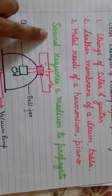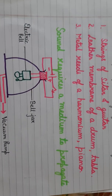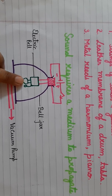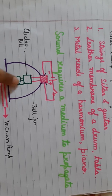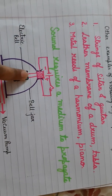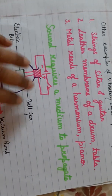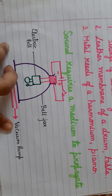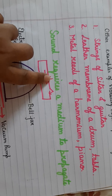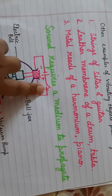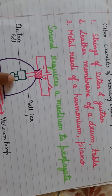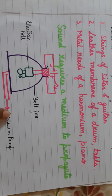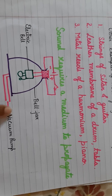Now look at the next topic: sound requires a medium to propagate. I have drawn a small activity for you. I have taken an electric bell connected to a cell, and it is covered with a glass bell jar. To the lower end of the bell jar, I have attached a vacuum pump. Initially, when the switch is on, the current flows through the bell and the bell starts ringing — we can hear it very clearly. But after some time, you remove the air slowly and steadily with the vacuum pump from the bell jar.